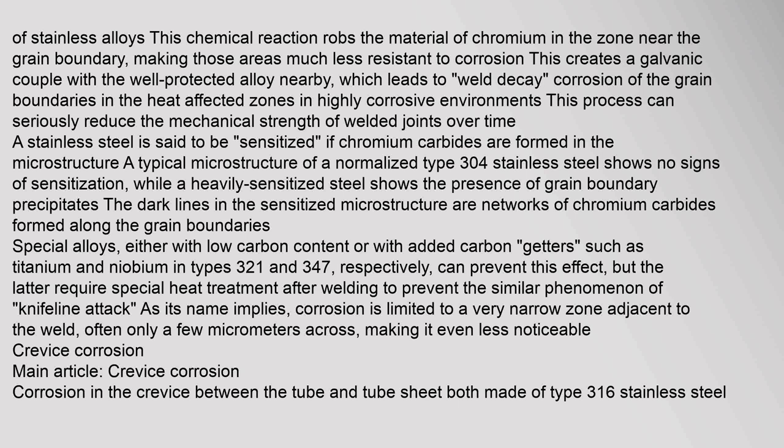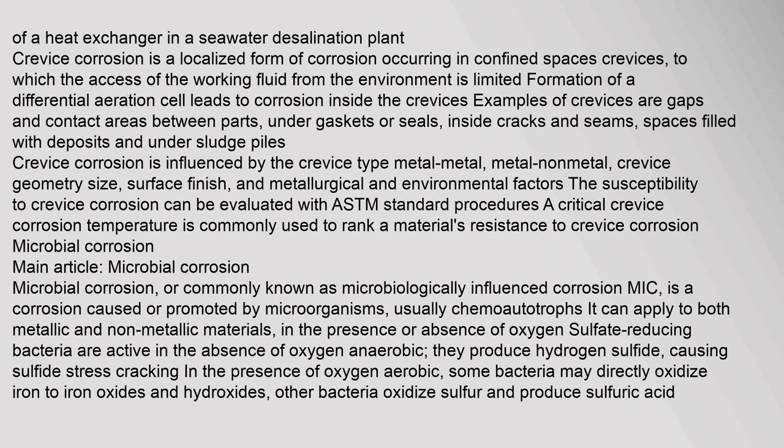Crevice corrosion — main article. Corrosion in the crevice between the tube and tube sheet — both made of type 316 stainless steel — of a heat exchanger in a seawater desalination plant. Crevice corrosion is a localized form of corrosion occurring in confined spaces — crevices — to which access of the working fluid from the environment is limited. Formation of a differential aeration cell leads to corrosion inside the crevice. Examples of crevices are gaps and contact areas between parts, under gaskets or seals, inside cracks and seams, spaces filled with deposits, and under sludge piles. Crevice corrosion is influenced by the crevice type, crevice geometry, surface finish, and metallurgical and environmental factors. A critical crevice corrosion temperature is commonly used to rank a material's resistance to crevice corrosion.